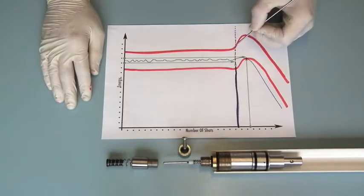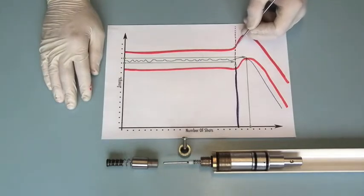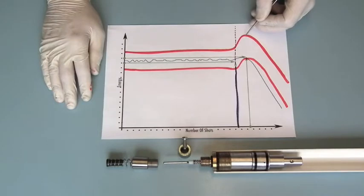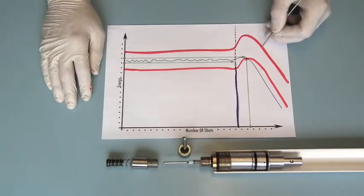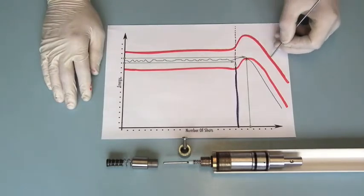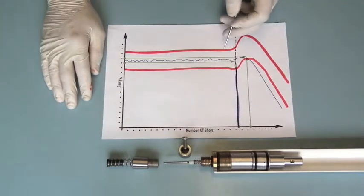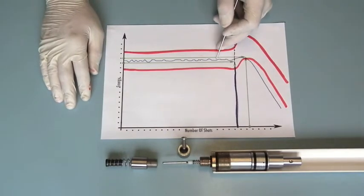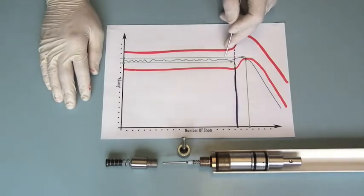Then you get to a point where all of a sudden the power does a quick spike and then over a few shots starts to drop off. This will typically be over the power that you've required or under the power, rarely spot on. Watch the other graphing videos to learn how to make the other adjustments.